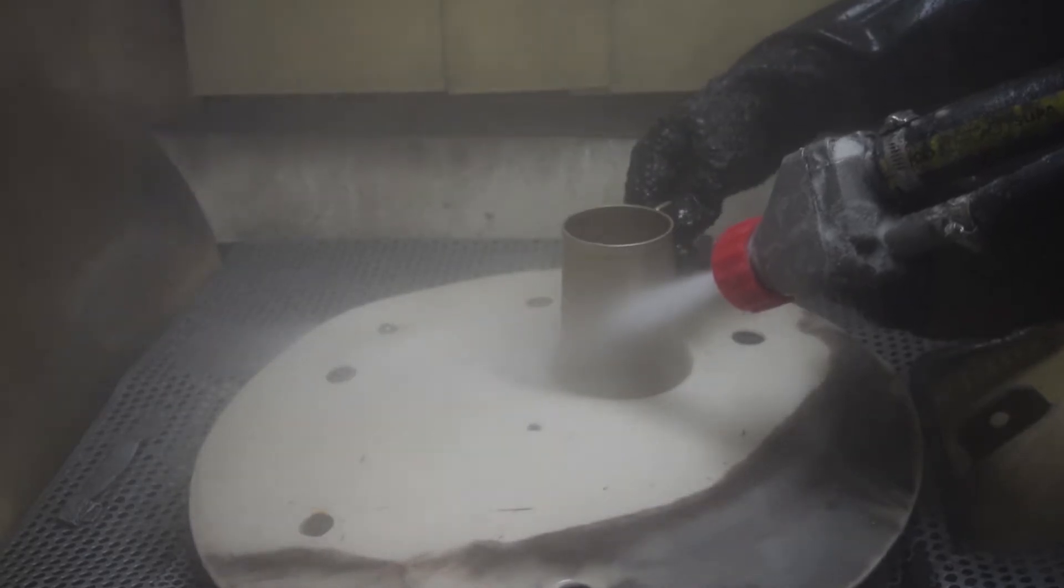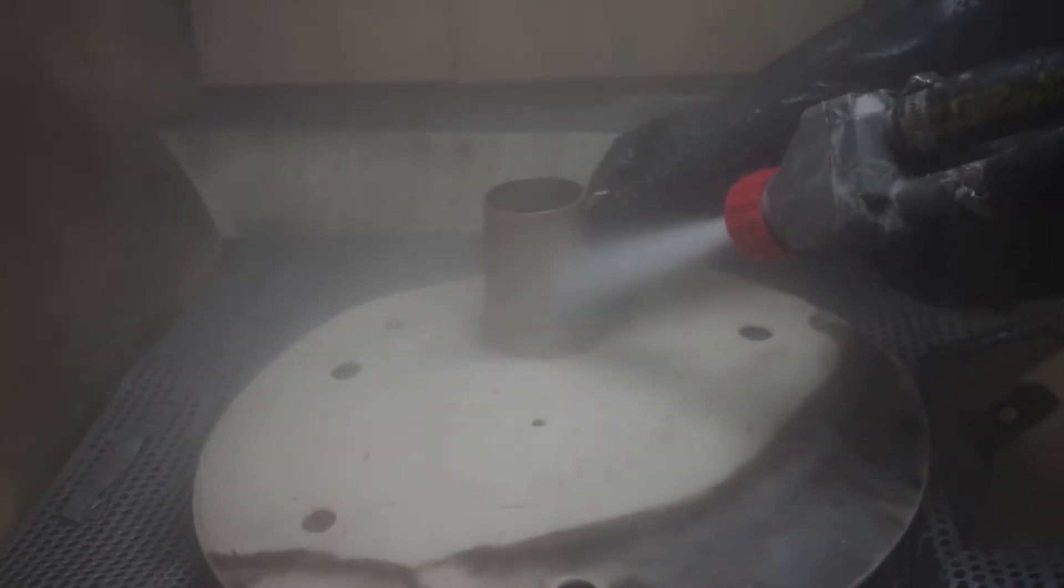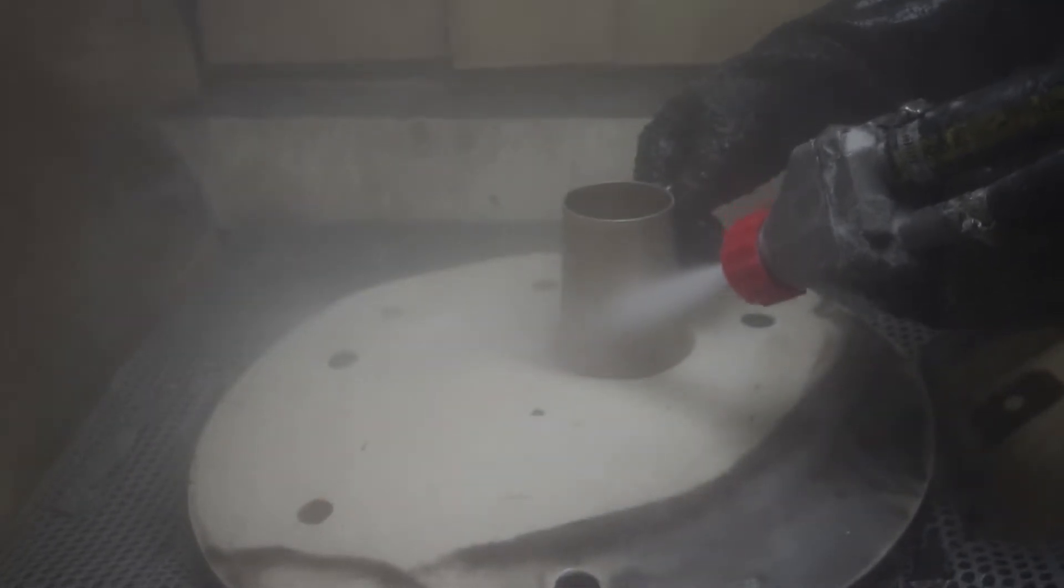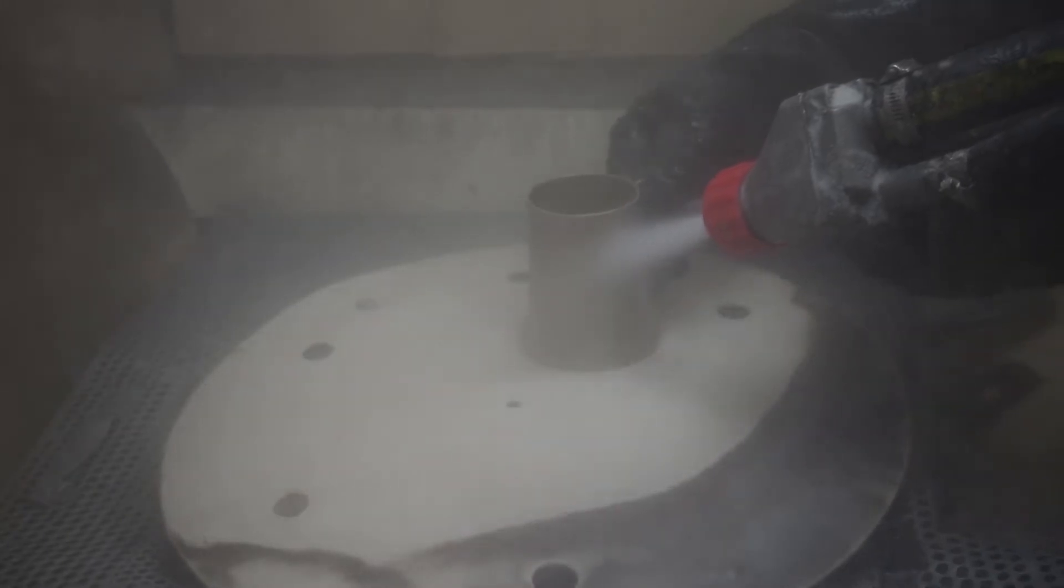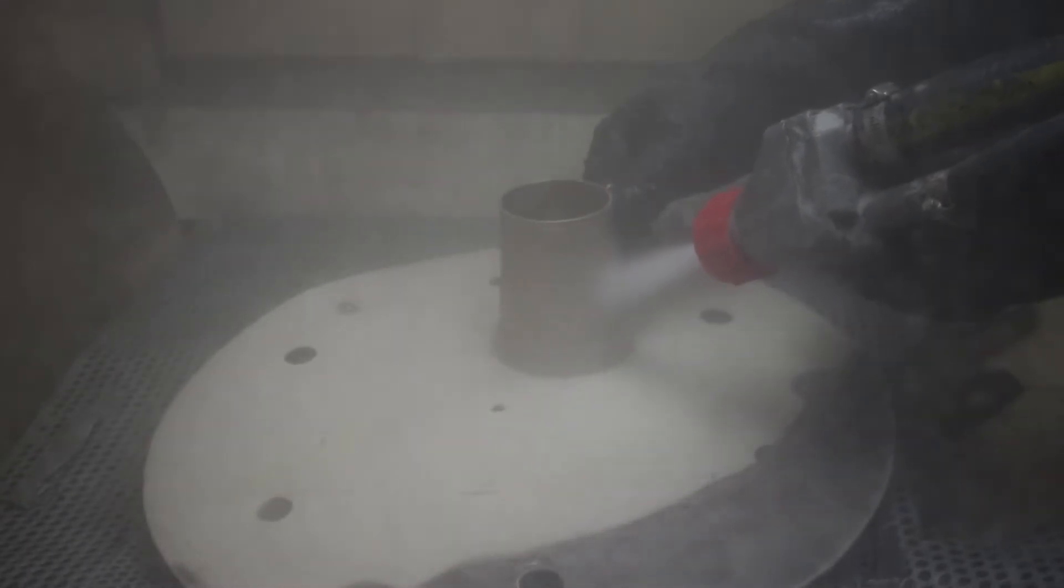So when you're blasting, just hold the gun about 10-15cm away from the part. There's an optional tool post. This is an old machine so it doesn't have one in there at the moment, but on a new machine we'll have a tool post that you'll be able to either secure the gun and move the part around.